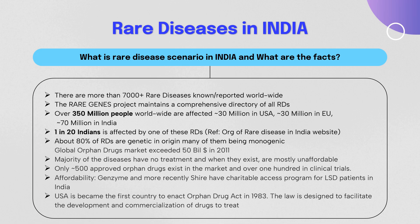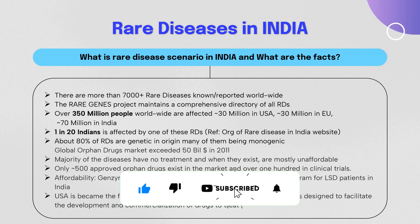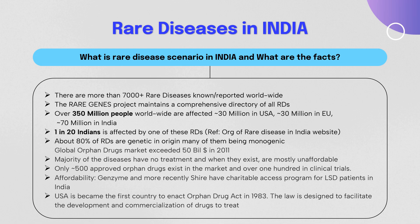In India, more than 7,000 rare diseases are known and reported worldwide, maintained in a comprehensive directory by rare genes projects. Over 350 million people are affected across the world, of which 70 million are in India — meaning 1 in 20 Indians is affected by a rare disease, according to the Organization of Rare Diseases India (ORDI). For working professionals with the ability to donate, ORDI is making significant efforts in promoting awareness, research, and legislation for rare diseases in India.